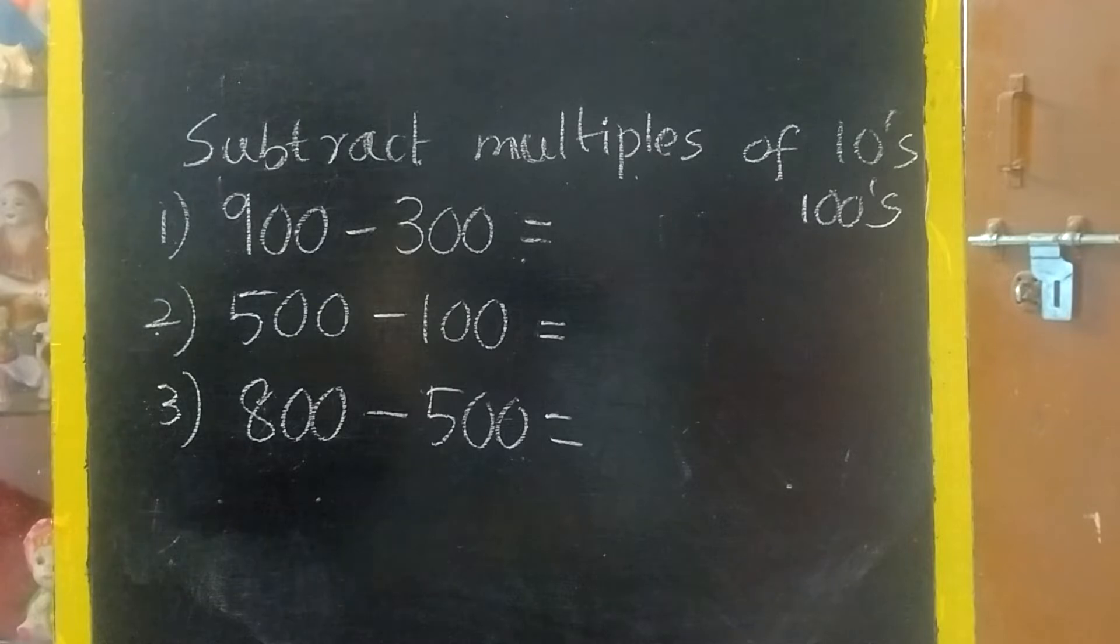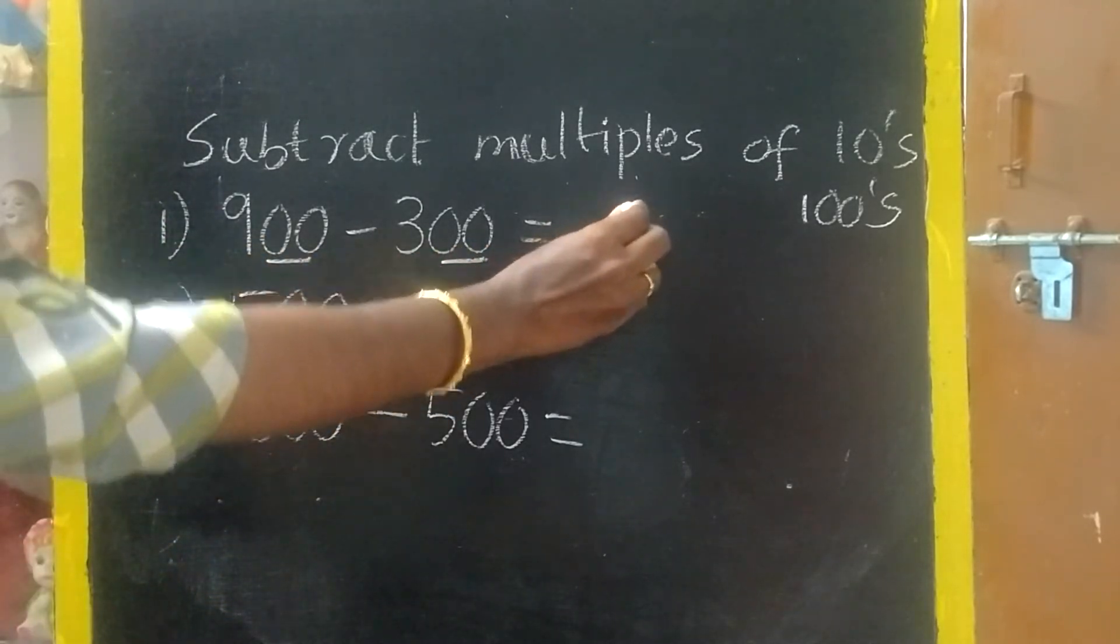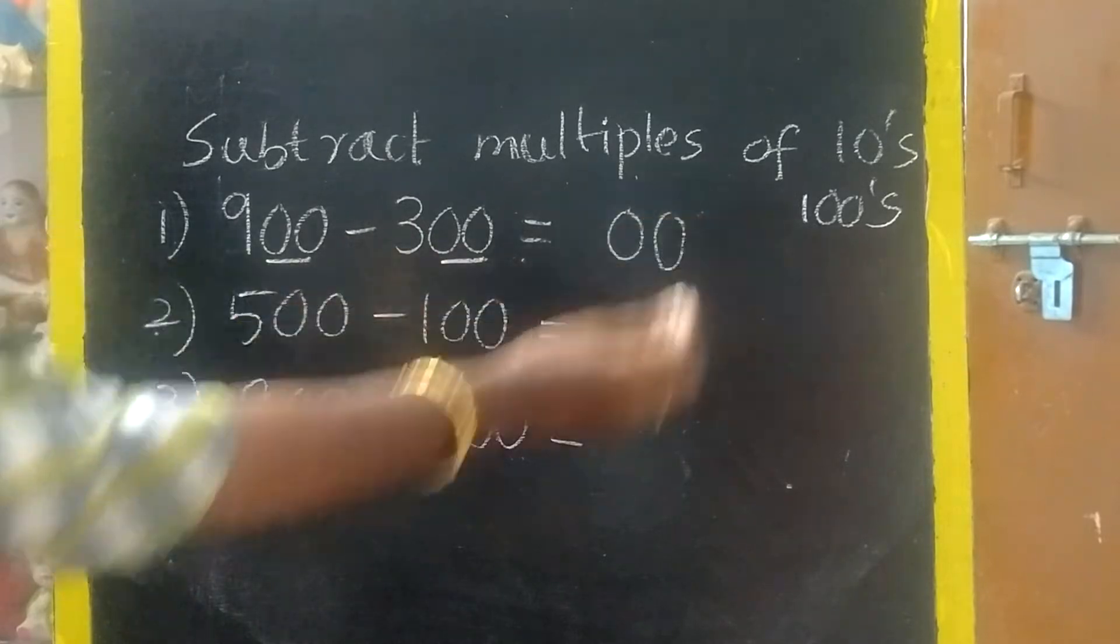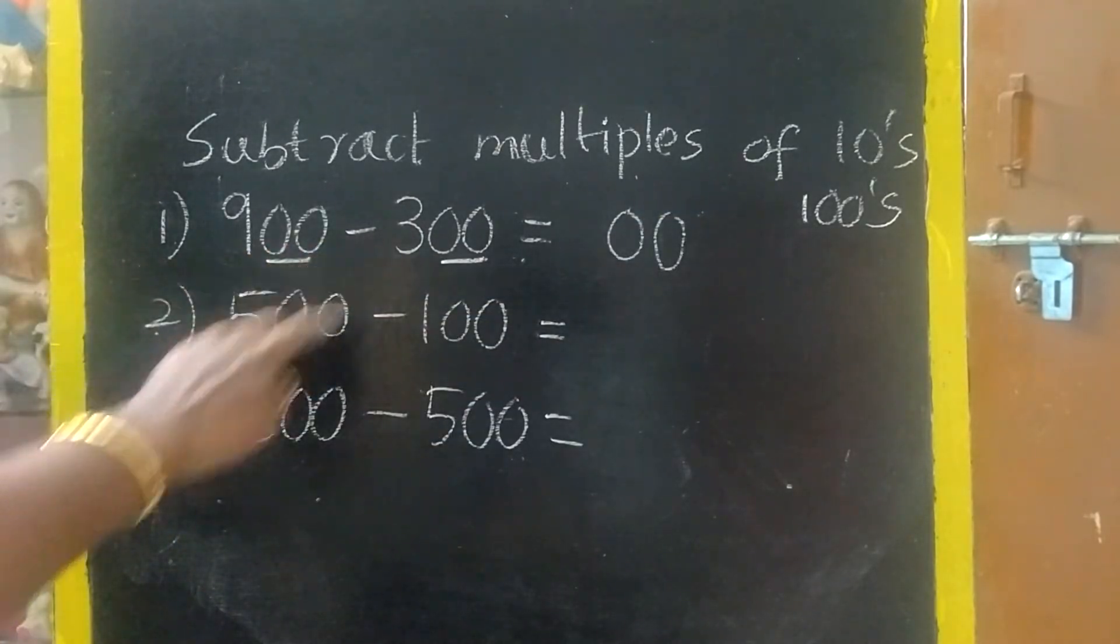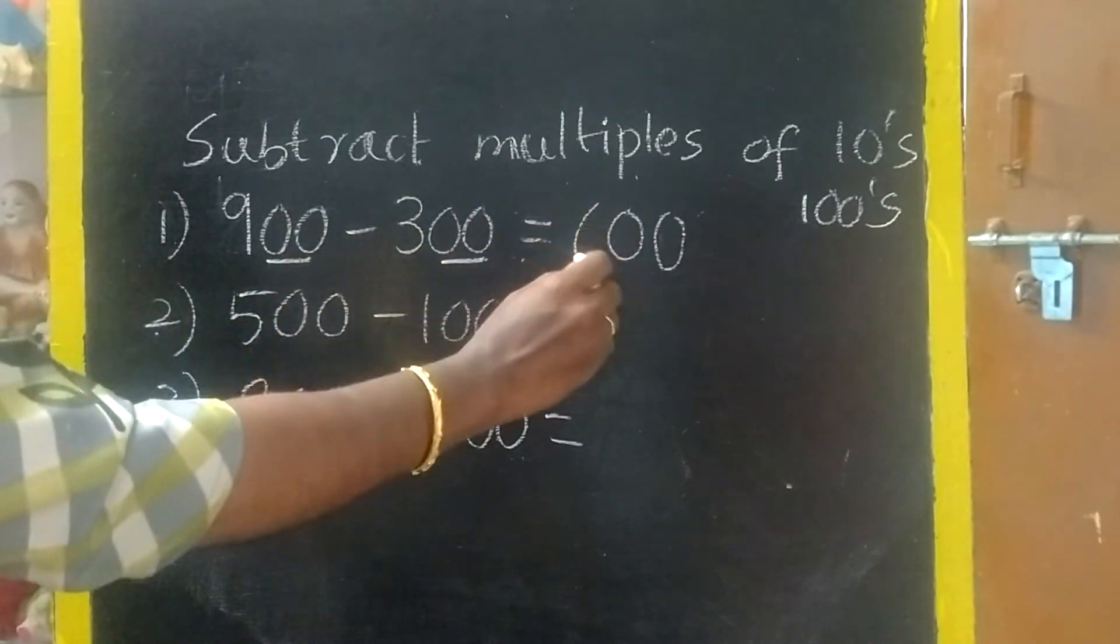Then only we can use this method. First, you think subtract 0, 0. 0 minus 0, 0. Again, 0 minus 0, 0. Now, 9 minus 3. Before 9: 8, 7, 6. So, the answer is 600.